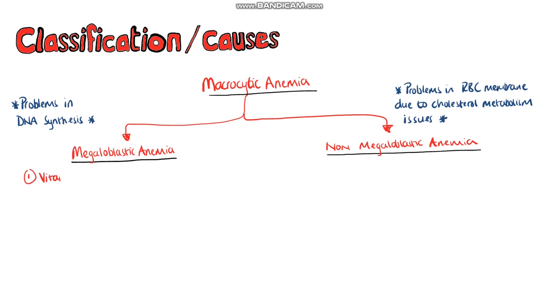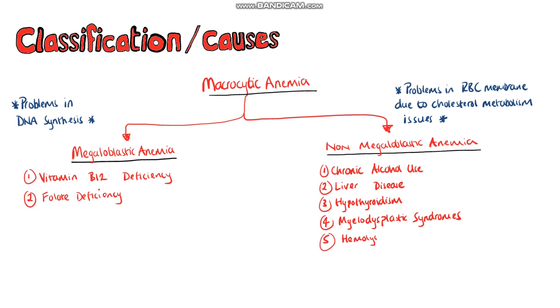Under megaloblastic, we have the ones that are more typical, like vitamin B12 deficiency and folate deficiency, while non-megaloblastic can have several causes, including chronic alcohol use, liver disease, hypothyroidism, myelodysplastic syndromes, and sometimes hemolysis and hemorrhage.